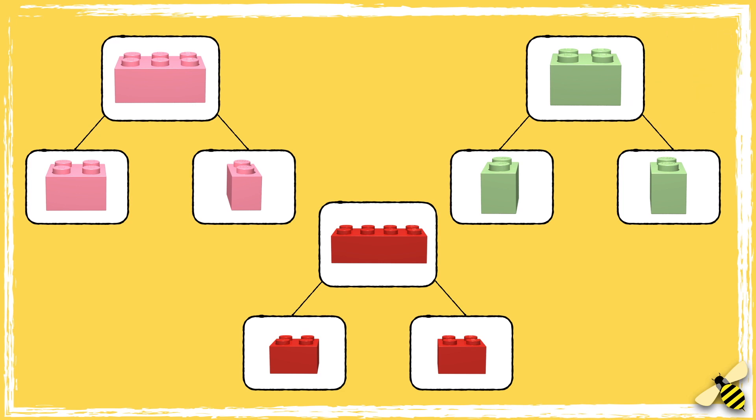Did you spot it? The pink shape has not been split into equal halves, as one part has four studs, and the other part has two studs. The red brick has been split into equal halves, as there are four studs on each half.